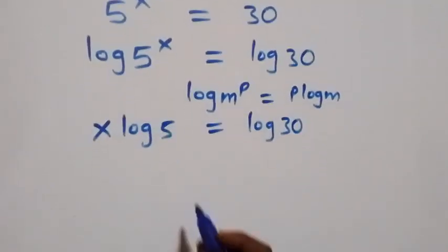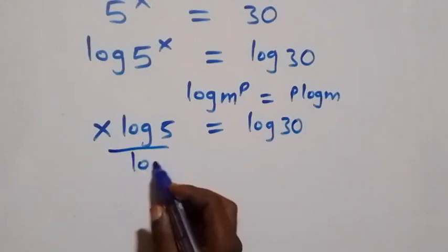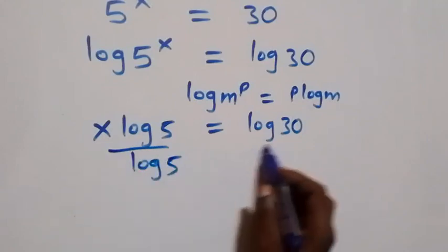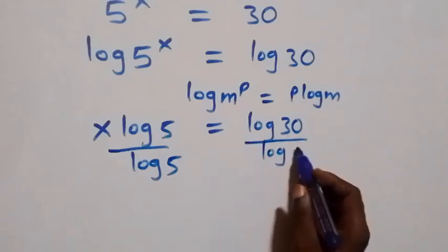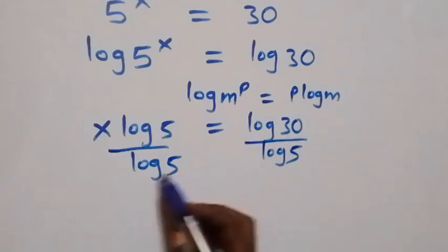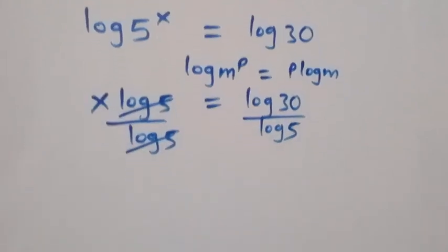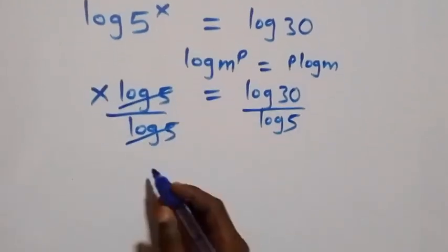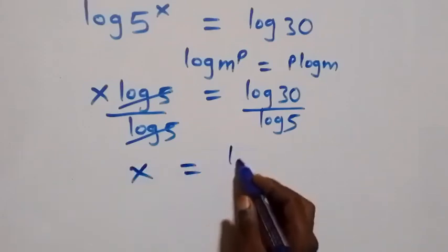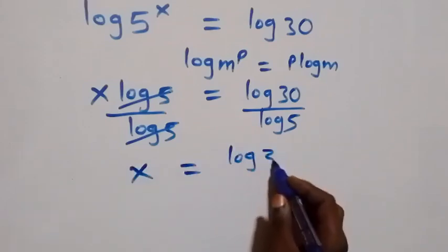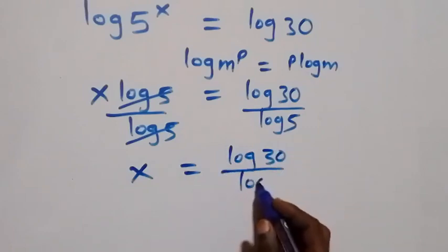The next step here, we divide both sides by log 5. So divide this side by log 5 and also divide this side by log 5. That is, log 5 cancels each other, and we are left with x which is equals to log 30 over log 5.